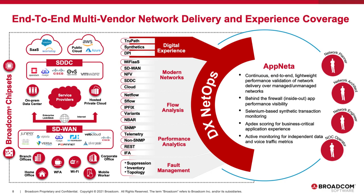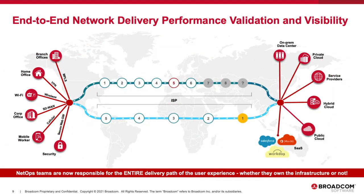This is what the entire solution looks like from a full-stack visibility perspective across any network our customers are using today. The solution achieves true end-to-end network delivery performance and validation — wherever the transaction starts, whether from a work-from-home environment, a coffee shop, corporate environment, or branch offices — being able to visualize every single hop across old and new network architectures to identify and isolate points of degradation and quickly troubleshoot.